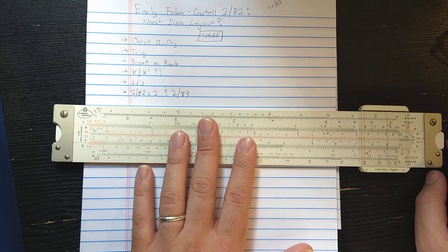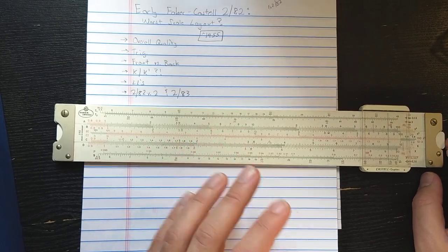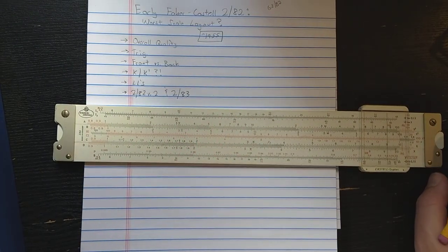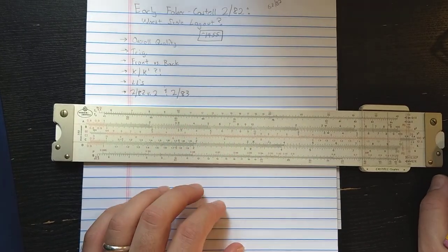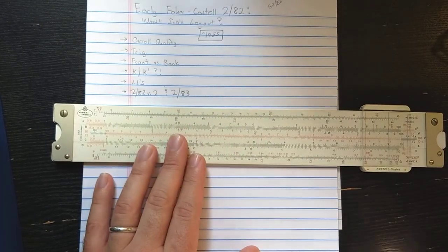Okay, so here we have trigonometry on the base, so I would prefer that this slide rule have an ST scale. It doesn't, but of course it doesn't, at least on this side. The Darmstadt design doesn't, so so far we can't criticize this rule too much.